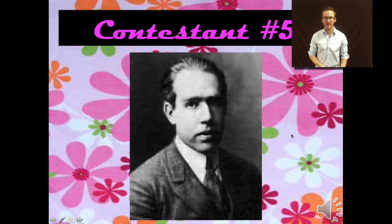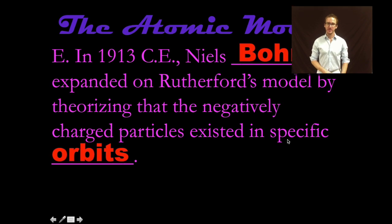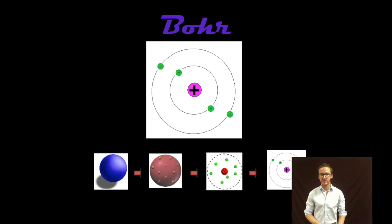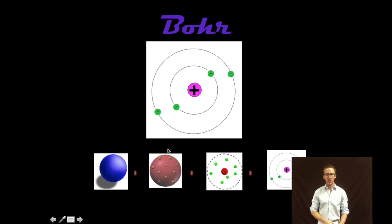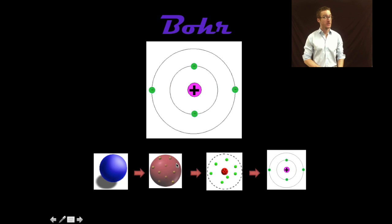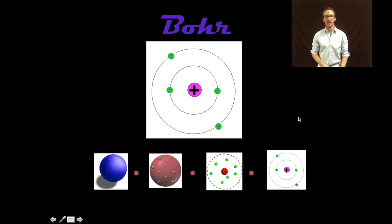Brings us to contestant number five, this guy is anything but boring. Niels Bohr took Rutherford's model one step further and theorized that those negatively charged particles discovered by Thompson actually existed in specific orbits around that positively charged nucleus discovered by Rutherford. So again, notice our models advancing: solid, indivisible, solid, divisible, mostly empty space where those negative particles hang out. And then those negative particles existing in very specific orbits, much like planets around the sun.